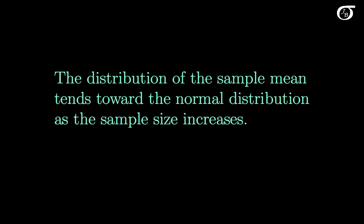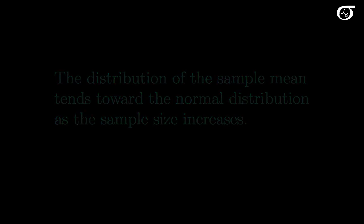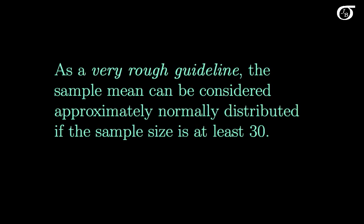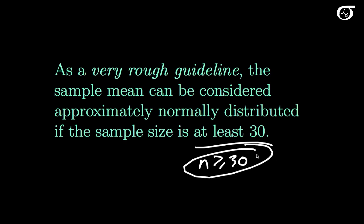The distribution of the sample mean tends toward the normal distribution as the sample size increases. As a very rough guideline, the sample mean can be considered approximately normally distributed if the sample size is at least 30. That is an extremely rough guideline — we can construct mathematical situations in which a sample size of 100 trillion is nowhere near enough to guarantee this. But for most practical situations, when we start getting sample sizes of 30, 40, 200, or 1000, we've got the scenario where our sample mean will be approximately normally distributed.